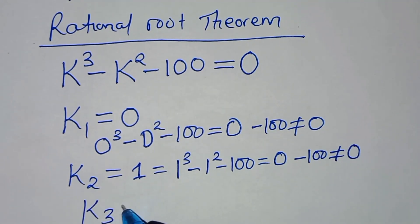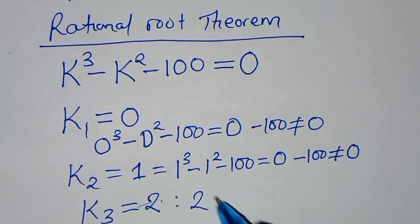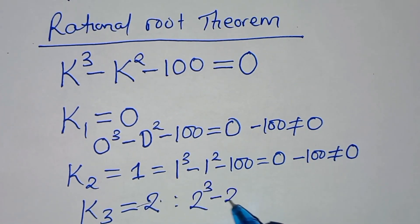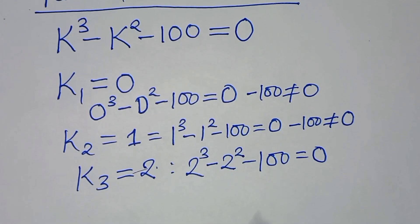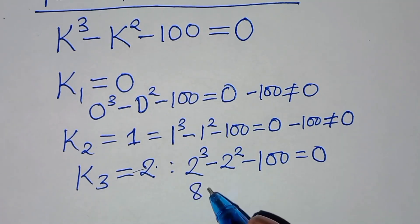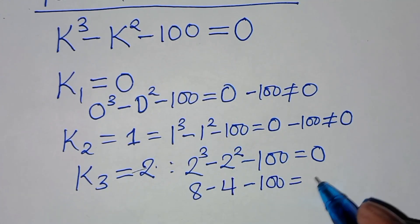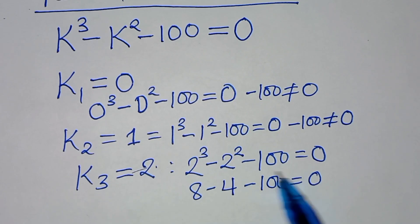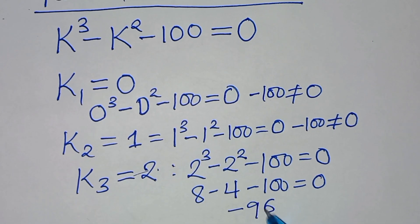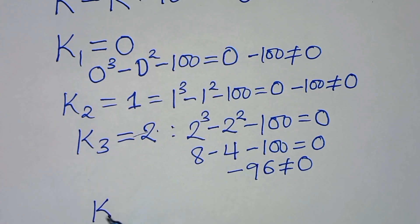Let's move to k₃ equal to 2. Substituting: 2³ minus 2² minus 100 equals 8 minus 4 minus 100, which gives 4 minus 100, equal to negative 96. This is not equal to 0.